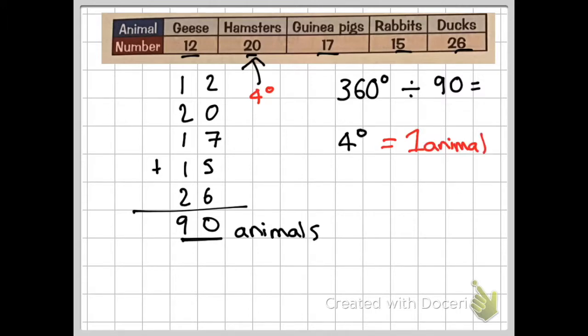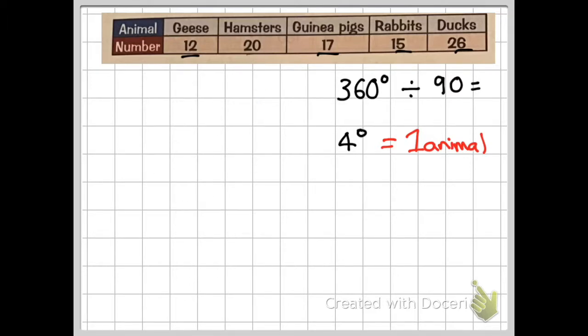Doesn't matter if it's a goose, if it's a hamster, if it's a guinea pig, if it's a rabbit, they're all worth four degrees each. Once I've done that, I have to then calculate how much is 12 geese worth? Because there's 12 geese here. So I would do 12 multiplied by four. Then for the hamsters, I would do 20 multiplied by four. I would do 17 multiplied by four for the guinea pigs, 15 multiplied by four for the rabbits.